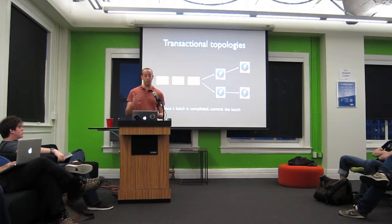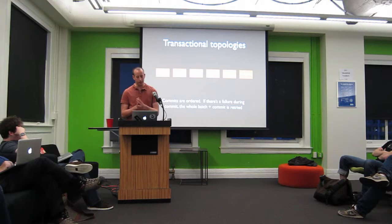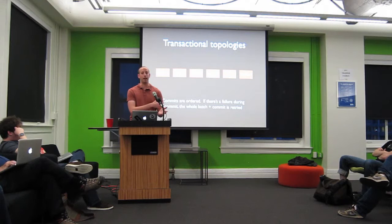There are two phases to processing a batch: you process a batch and when you finish processing you commit the batch. Any number of bolts in your topology can participate in this commit phase. The key thing that transactional topologies provide is that your commits are ordered. If there's a failure during a commit it'll replay that commit, but it'll never go back and commit some previous batch that it already committed.